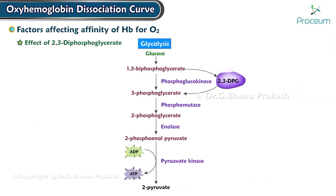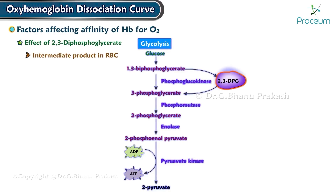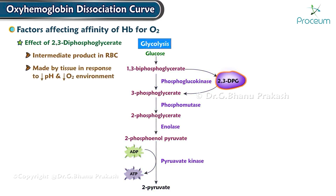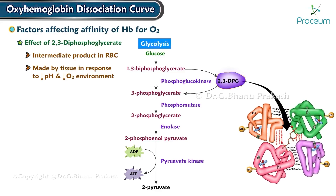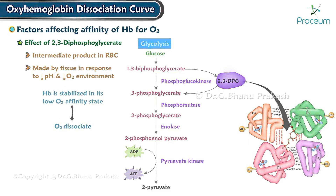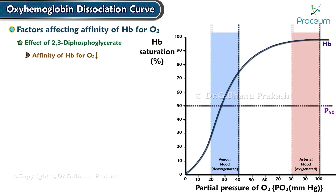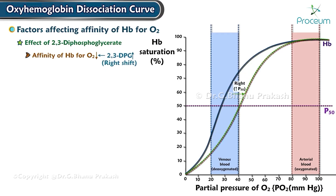2,3-diphosphoglycerate is an intermediate product formed in red blood cells during glycolysis and made by tissue in response to a low pH and low oxygen environment. When 2,3-diphosphoglycerate binds, hemoglobin is stabilized in its low oxygen affinity state, causing oxygen to dissociate. The affinity of hemoglobin for oxygen decreases as 2,3-diphosphoglycerate levels increase, resulting in a rightward shift of the dissociation curve.